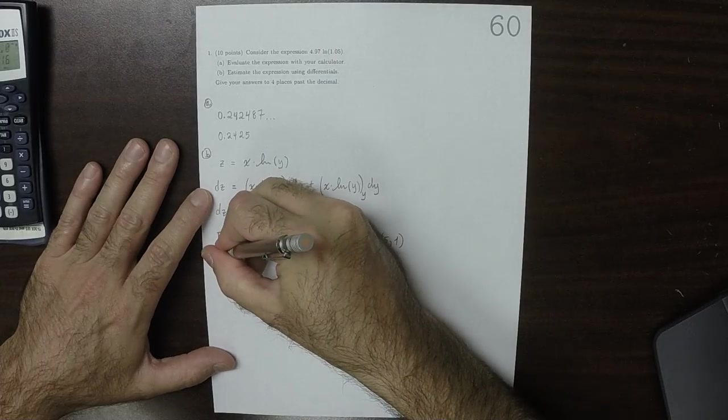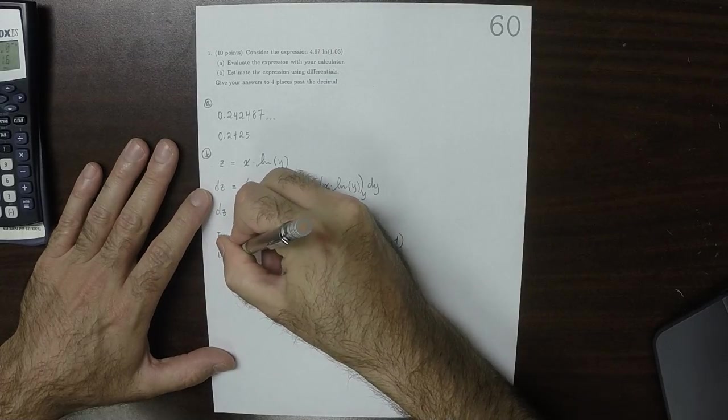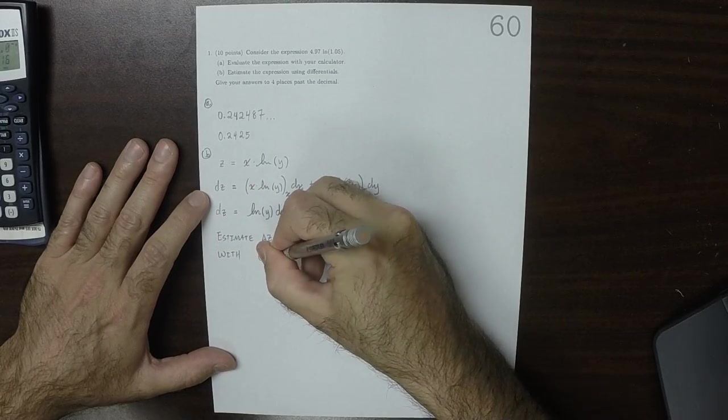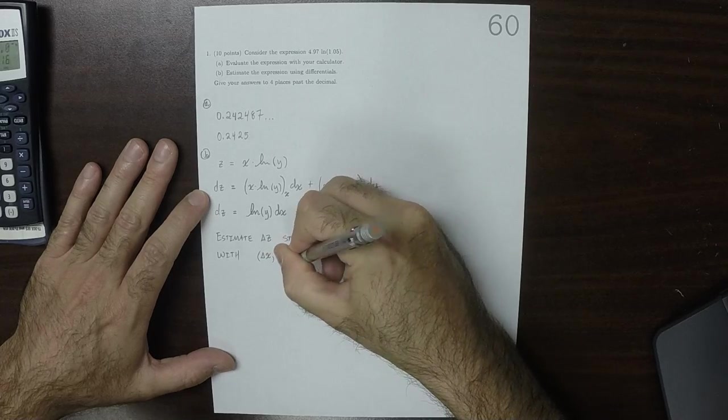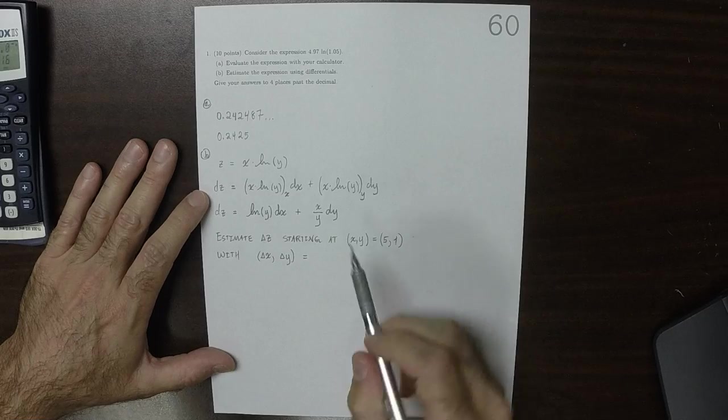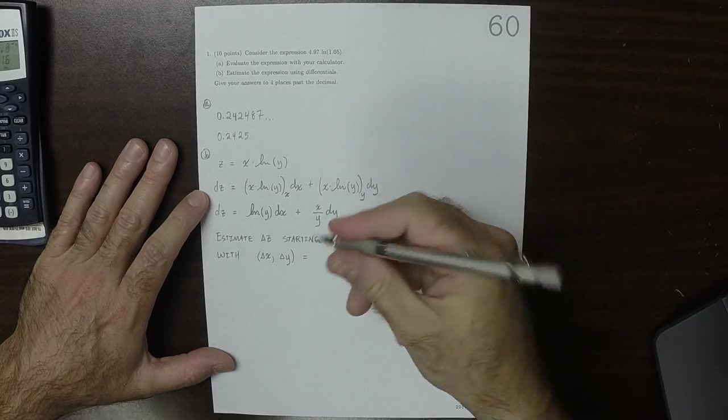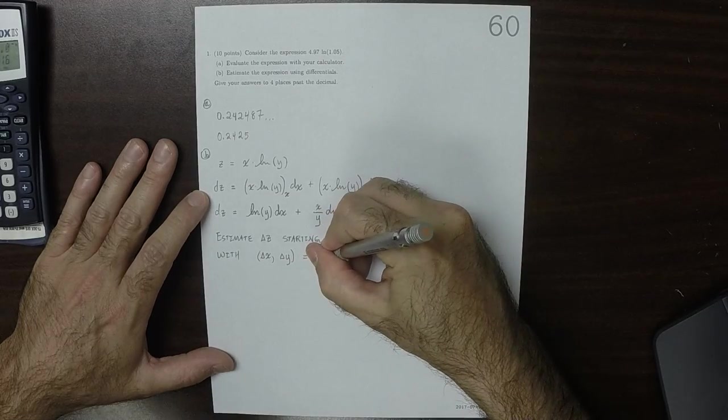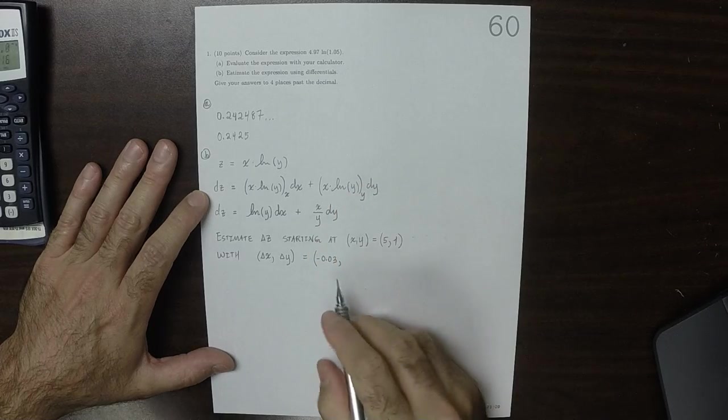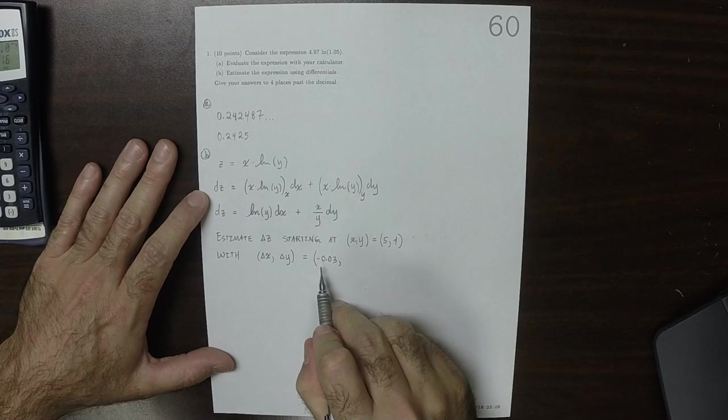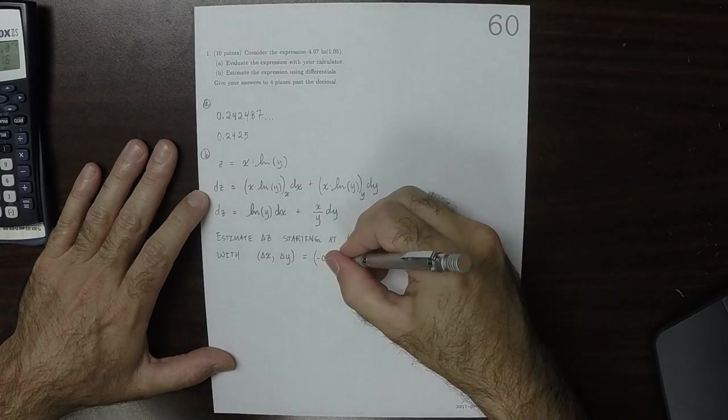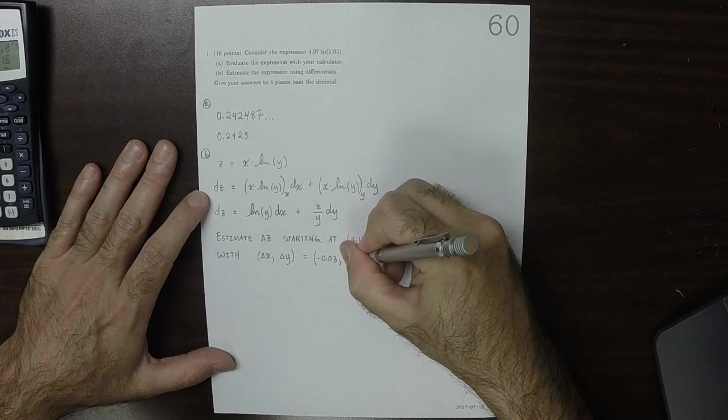And we'll do this with delta x delta y equal to, so then since we're starting at 5 and we're going to go to the left, that means that delta x is negative 0.03. That would get us to 4.97. And then since we're starting at 1 and we need to get to 1.05, that means that delta y is 0.05.